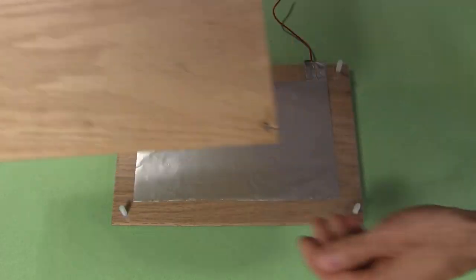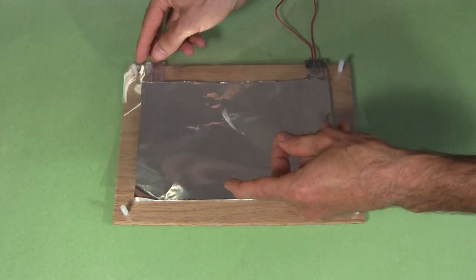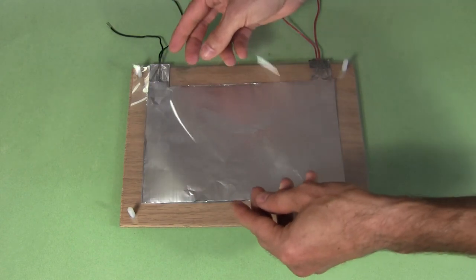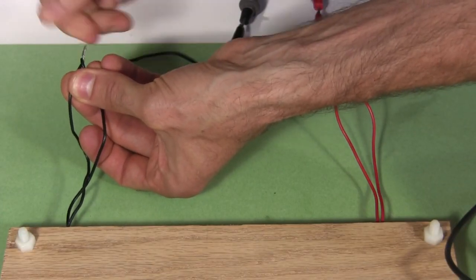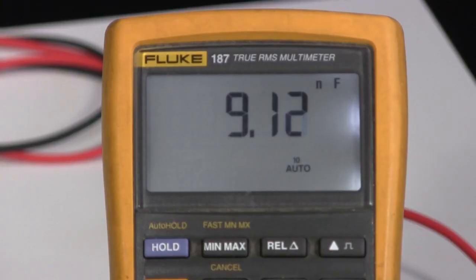But what if it wasn't? Here I open it up and add two more foils and transparencies, such that I have positive, negative, positive, and then negative. I connect the positives together, and the negatives together. And re-measure to get 9.12 nF.